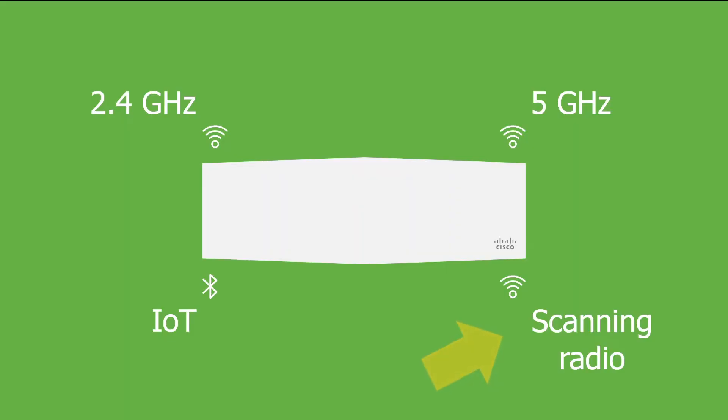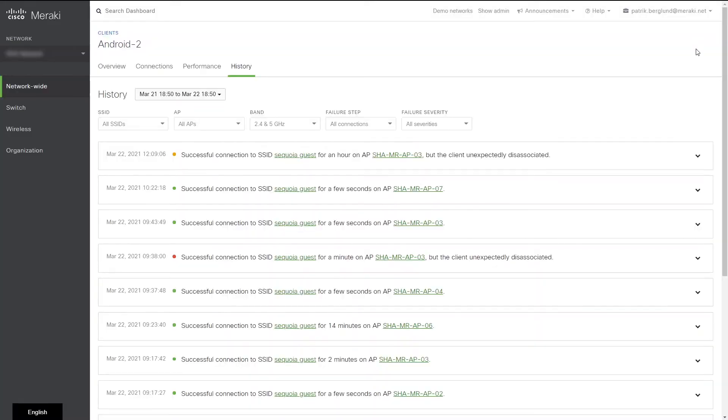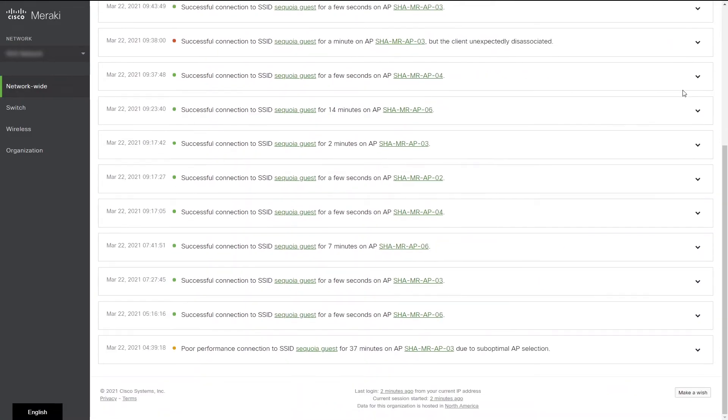The Meraki access points use their scanning radio to listen to the communication that is happening from a client device to any other access point that is in their RF area. When the dashboard identifies a sticky client situation, it will add this to the client's history log.